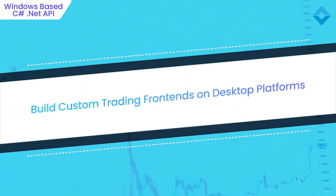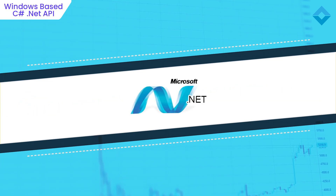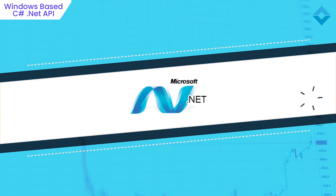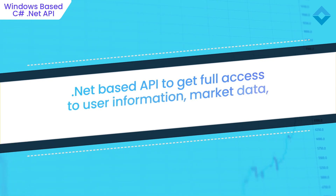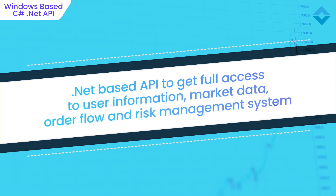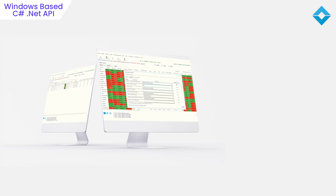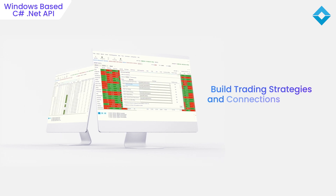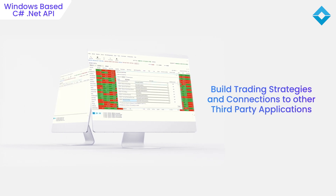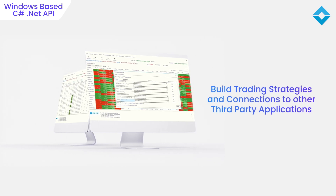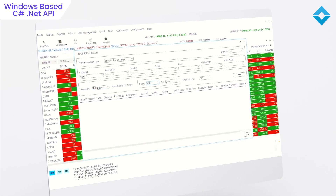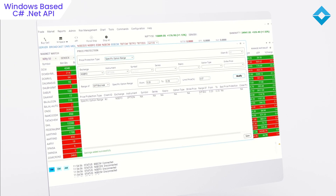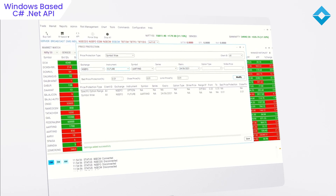If your goal is to build custom trading front ends on desktop platforms, you can also use our advanced .NET-based API to get full access to user information, market data, order flow and risk management system. You can also build trading strategies and connections to other third-party applications using this API. Send us a request to receive sample API codes and innovative trading terminal features that can be built using this API.